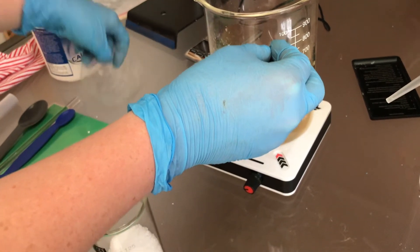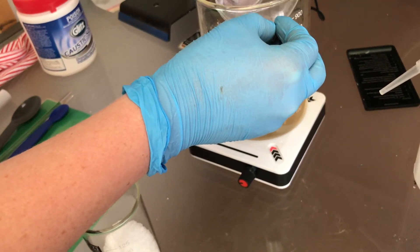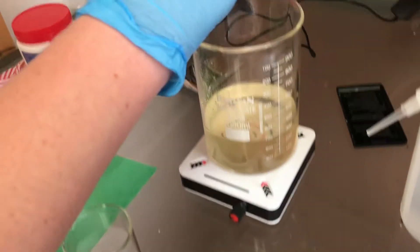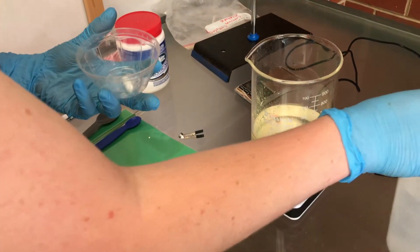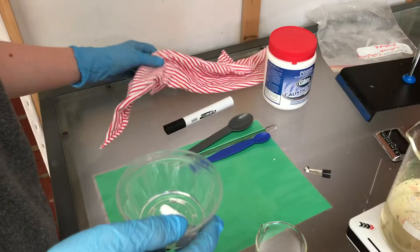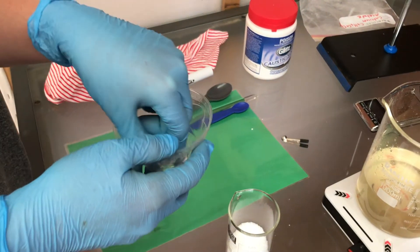Here I am using a magnet to get out the stir bar. I then put the stir bar into a little plastic container and rinse down with water. I then use an old t-shirt to dry the stir bar.